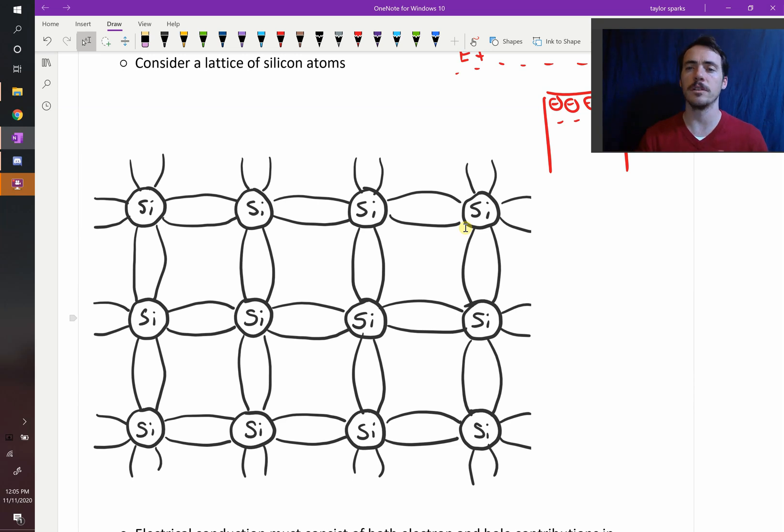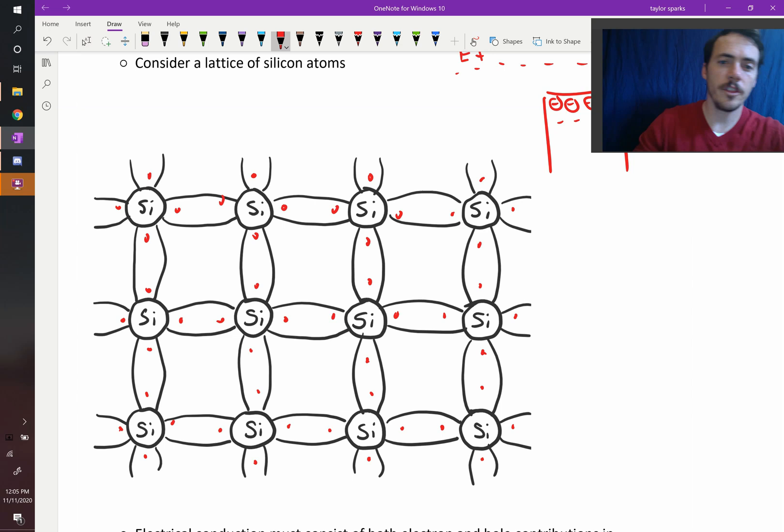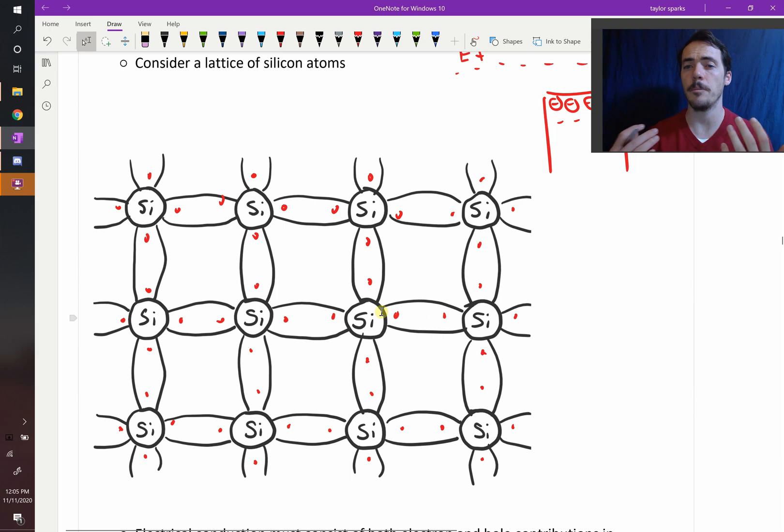But consider this for a minute. What do we know about each silicon? We know that each silicon has four electrons. So if we start drawing these, this has one, two, three, four. Every single silicon had four electrons. And so by all sharing, they end up with one, two, three, four, five, six, seven, eight. They have a filled shell and so they're happy.